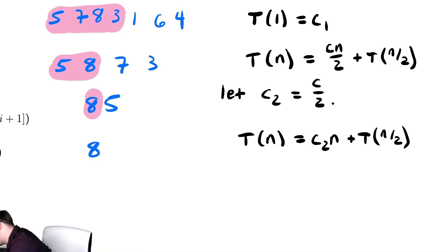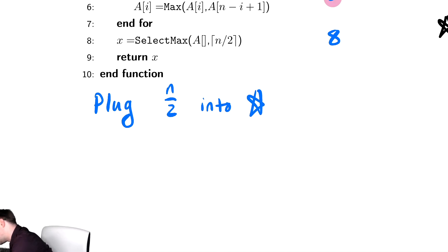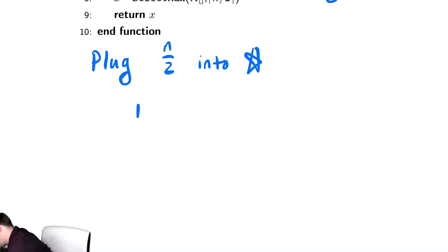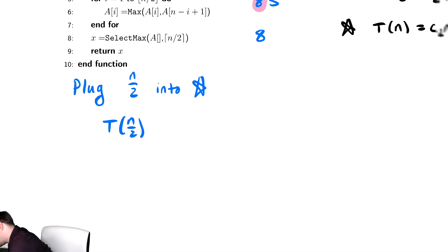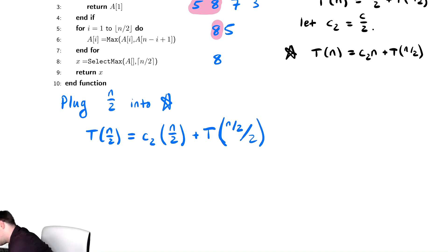So now we want to plug n over 2 back into star. To do that, we have T(n/2) on the left hand side is equal to c₂ times n, but n is getting replaced with n over 2, plus T(n/2) but n over 2 is getting replaced with n over 2. After a bit of algebra, we get T(n/2) is equal to c₂n over 2 plus T(n/4).